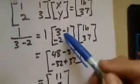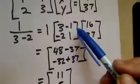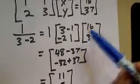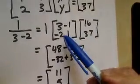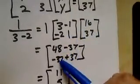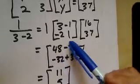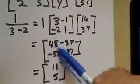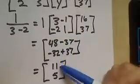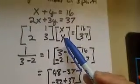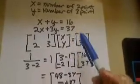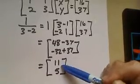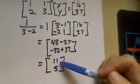Let's do the multiplication. 3 times 16 is 48. Negative 1 times 37 is minus 37. Negative 2 times 16 is negative 32. 1 times 37 is 37. Combine them and we get 11 and 5. Now, x stood for the number of two-point shots, so there were 11 two-point shots and 5 three-point shots.